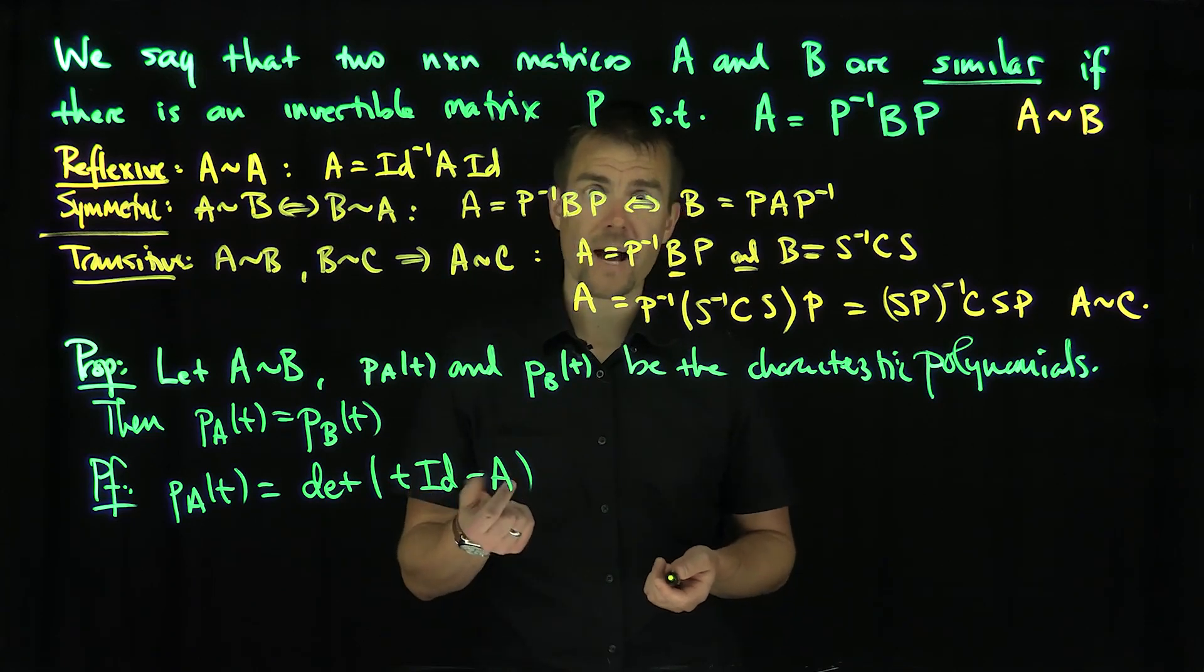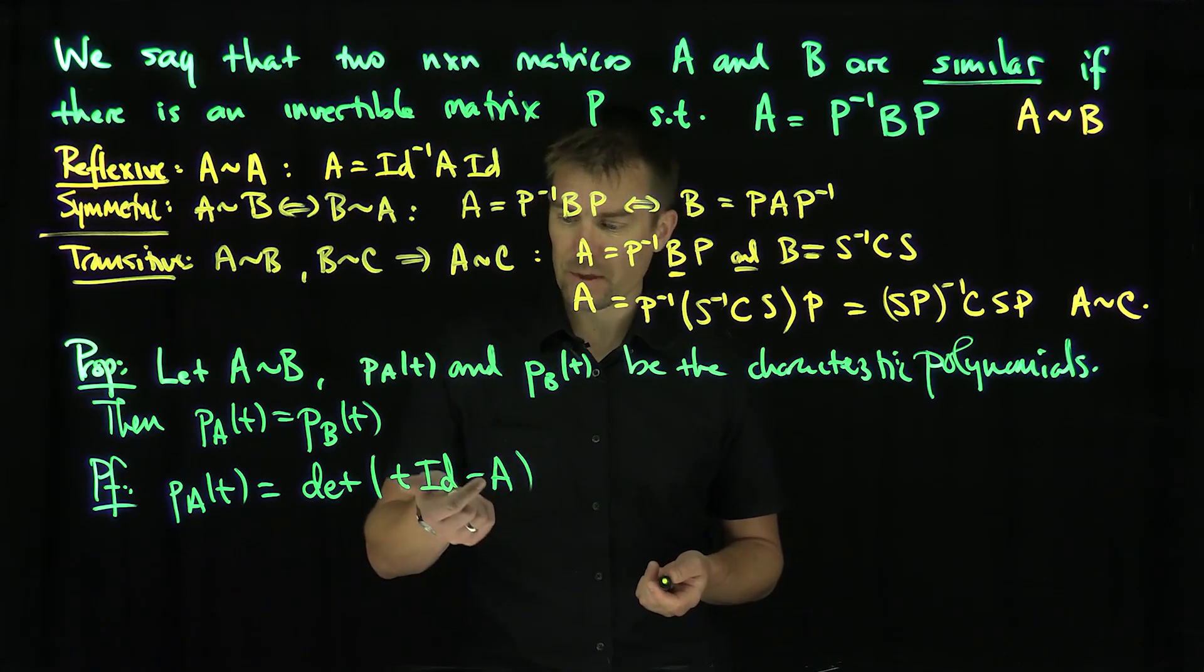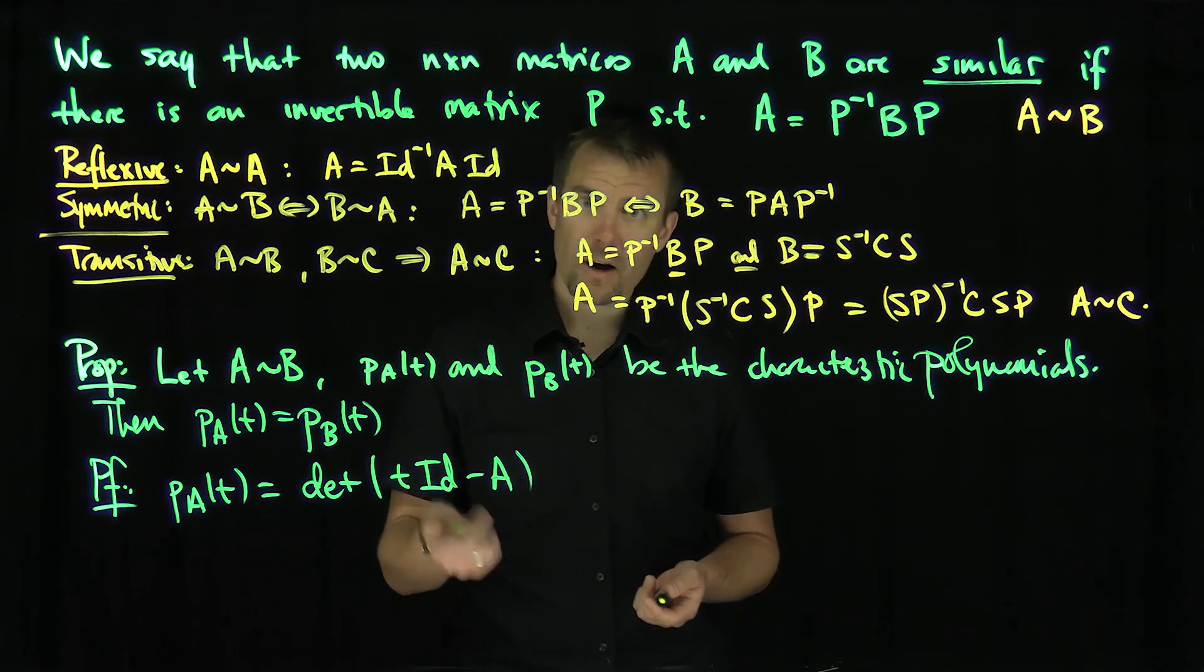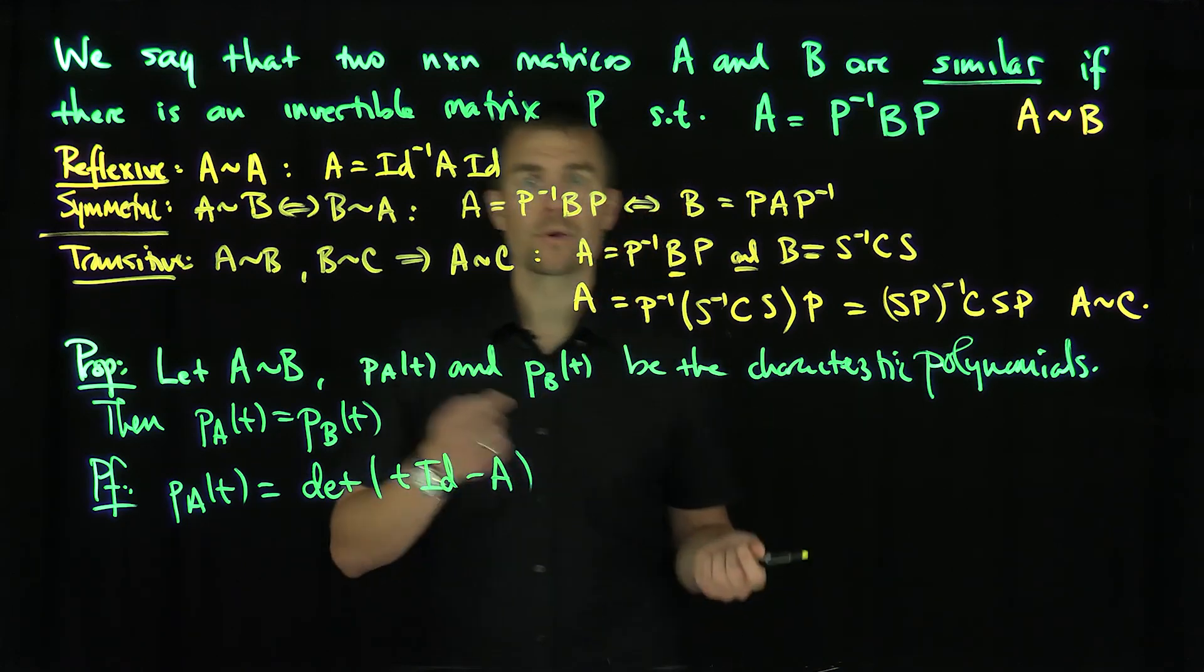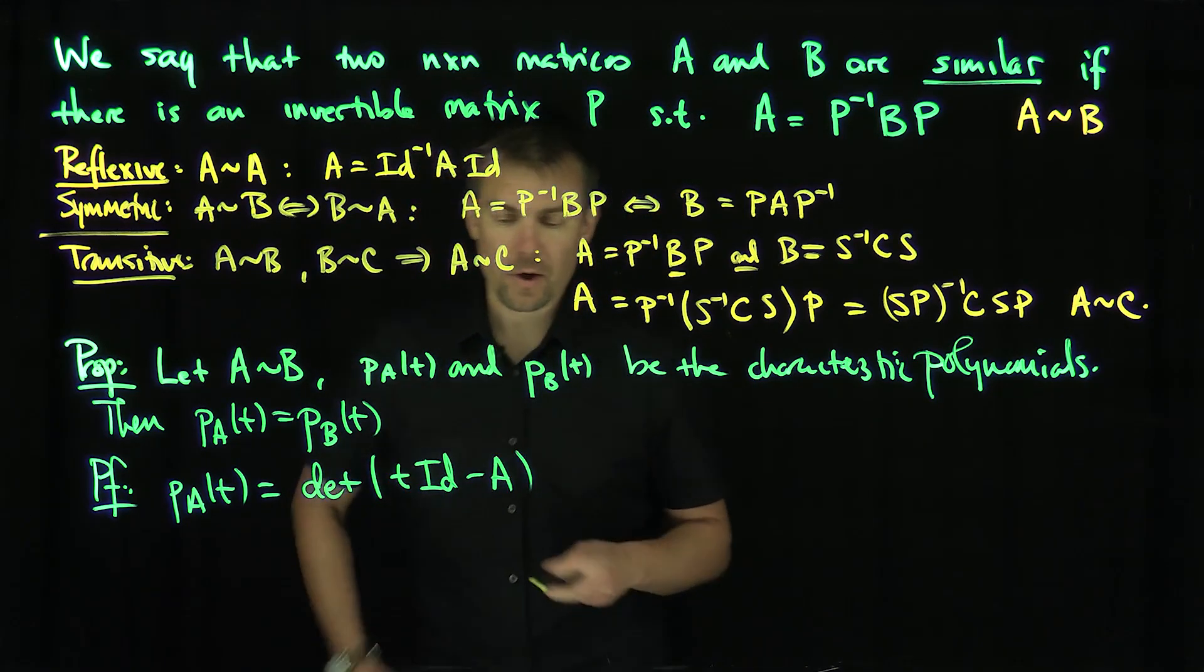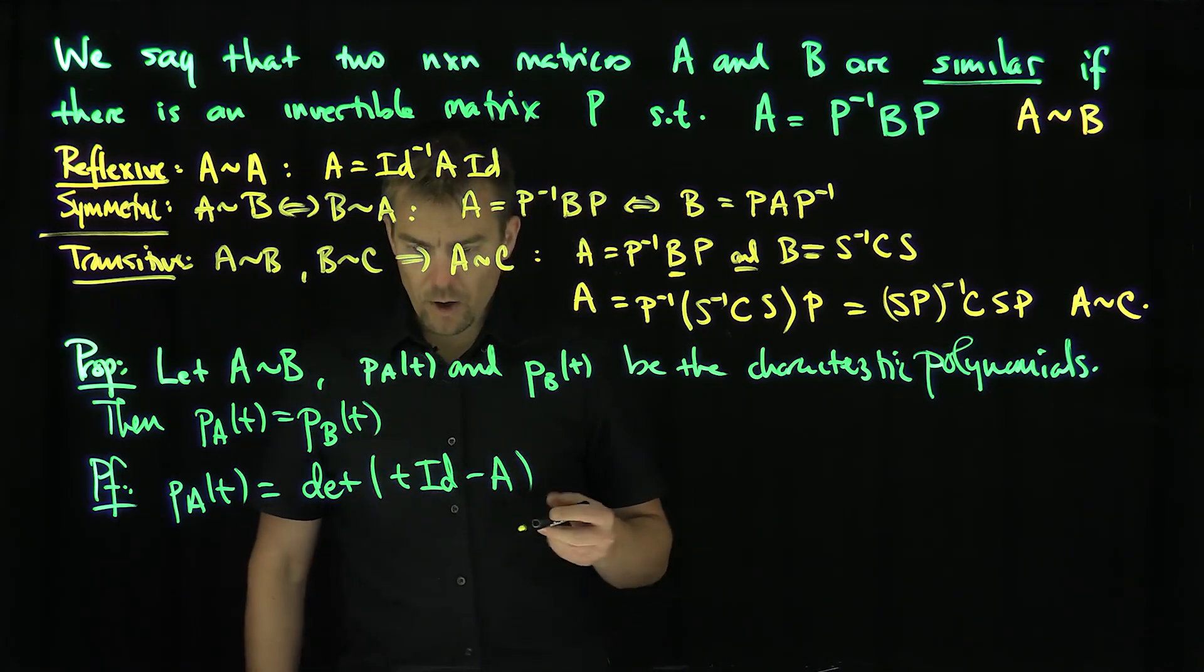You can use either convention. You get a negative one to the n outside of the characteristic function. Some books will say A minus T times the identity, others will say T minus the identity. It's irrelevant, they're both correct.